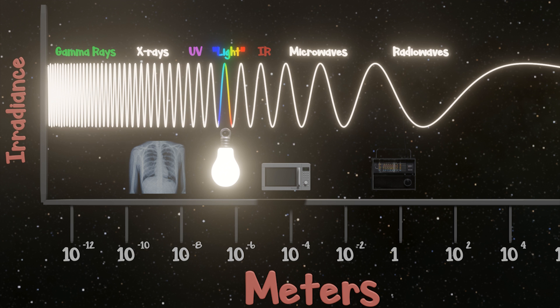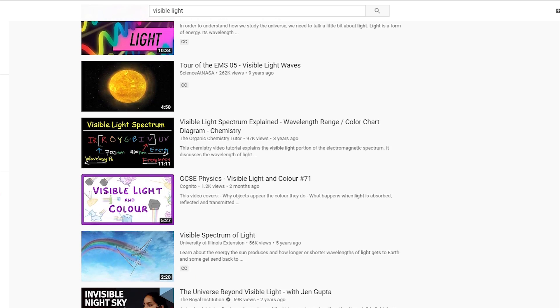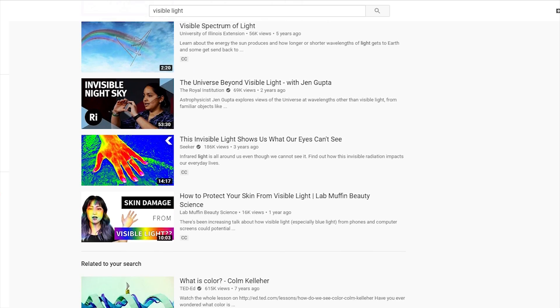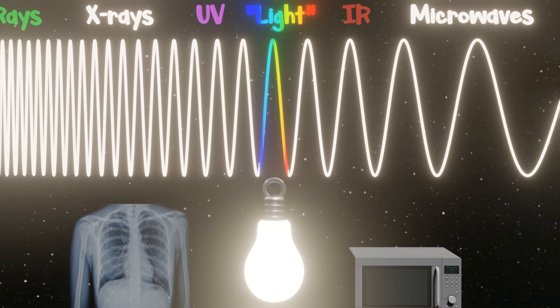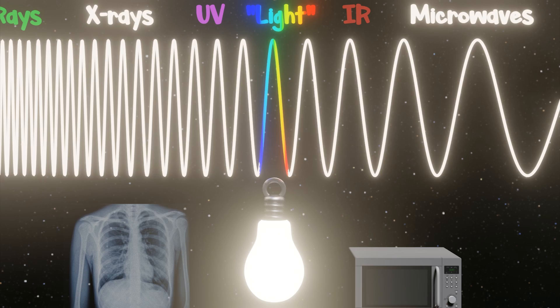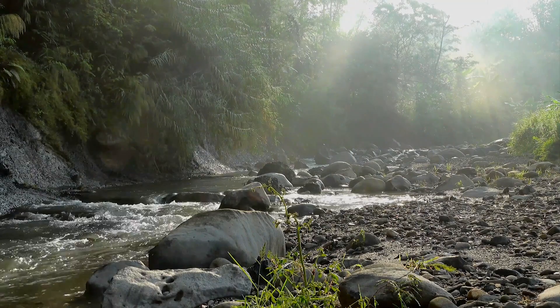I'll imagine you already know what the visible spectrum of light is. If not, there's a lot of videos that can describe it as well as I could. What you probably took away from such videos is just how small that sliver of light is and how strange it is that we are only sensitive to this tiny portion. But when we look at the world we live in, it makes sense.